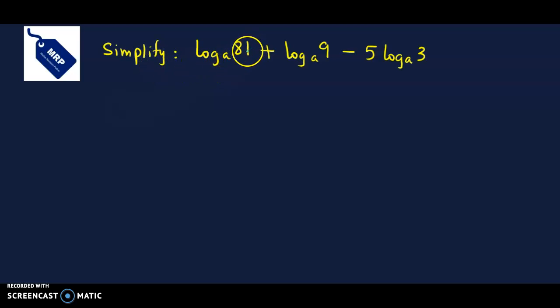The question is, simplify log 81 to the base a plus log 9 to the base a minus 5 times log 3 to the base a. So we have been given log 81 base a plus log 9 base a minus 5 times log 3 to the base a.